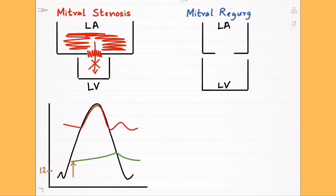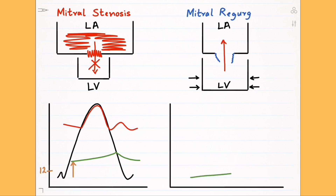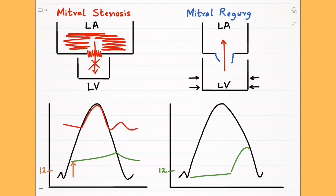In mitral regurgitation, we have a loose mitral valve which can't close, so when the left ventricle contracts, some of the blood and left ventricular pressure is transmitted to the left atrium. That's why the left atrial pressure curve starts normally at below 12 millimeters of mercury, but as soon as the left ventricular pressure goes up during contraction, there is a sharp rise in left atrial pressure. After the left ventricular pressure decreases during diastole, the left atrial pressure also comes down to normal levels. This hump in the left atrial pressure curve will help you tell the difference between mitral regurgitation and mitral stenosis.